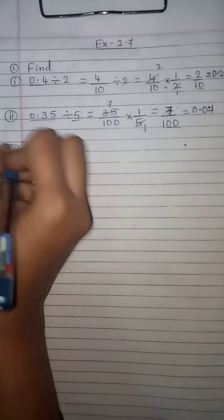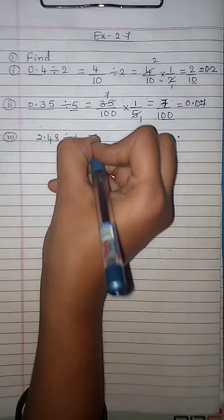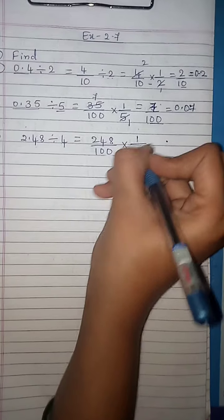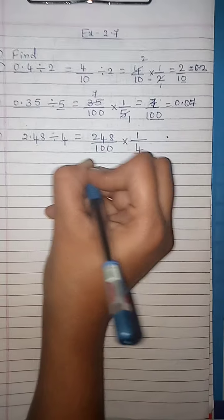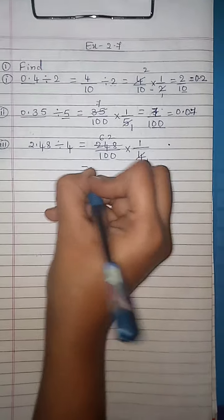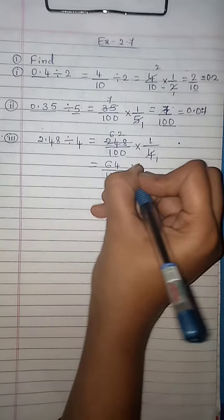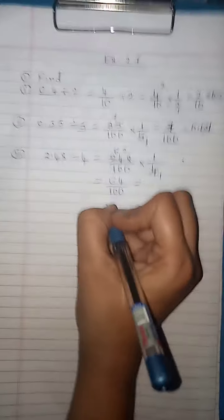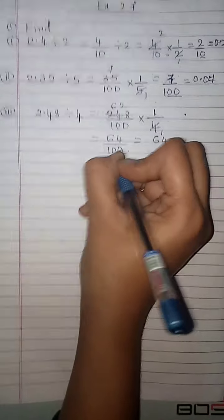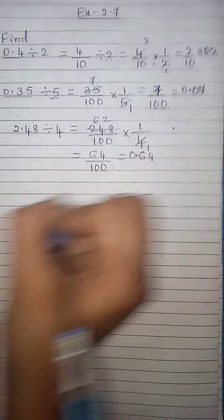Take the third one: 2.48 divided by 4. You can write it as 248 divided by 100. Take the reciprocal of 4, which is 1 by 4. You get 64 by 100. There are 2 zeros, so shift the decimal point from right to left by 2 digits. After 2 digits, you get 0.64.